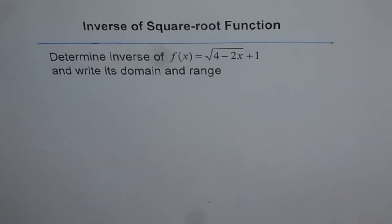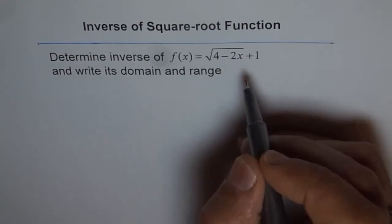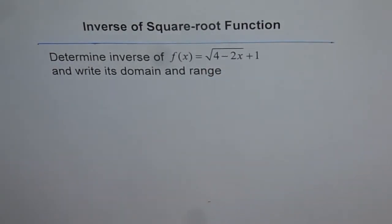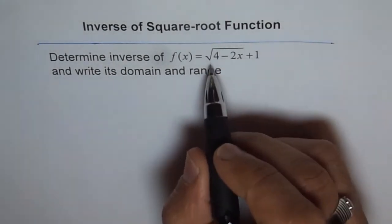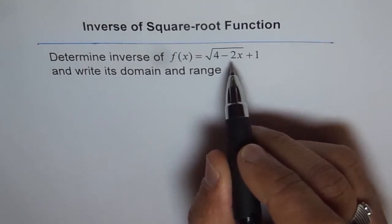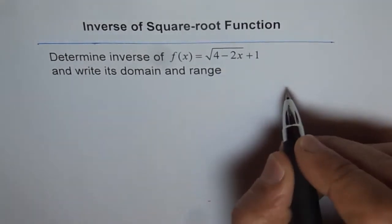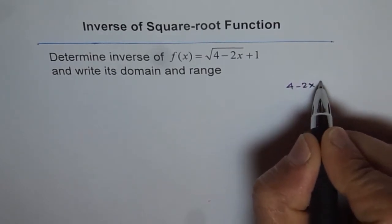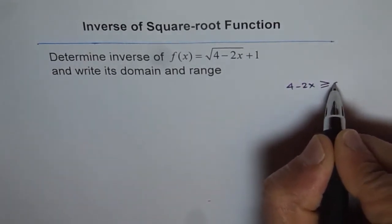In these kinds of questions, we should really start with the domain and range of the function. Let's look into this function and try to figure out what the domain is. Within the square root, we should always have a non-negative value. So that means 4 minus 2x should be greater than or equal to 0.